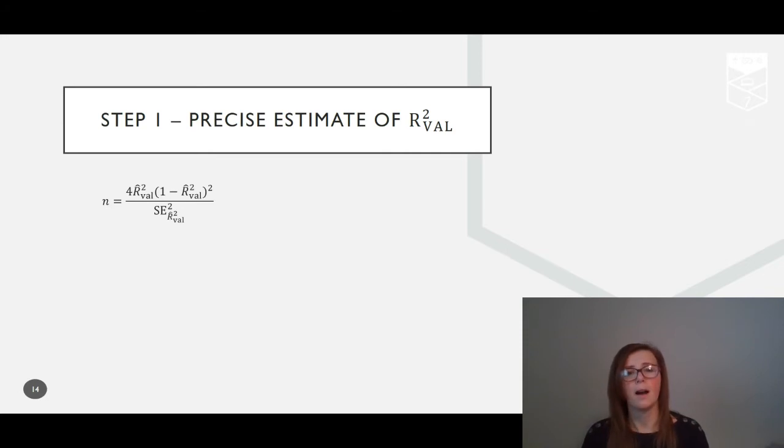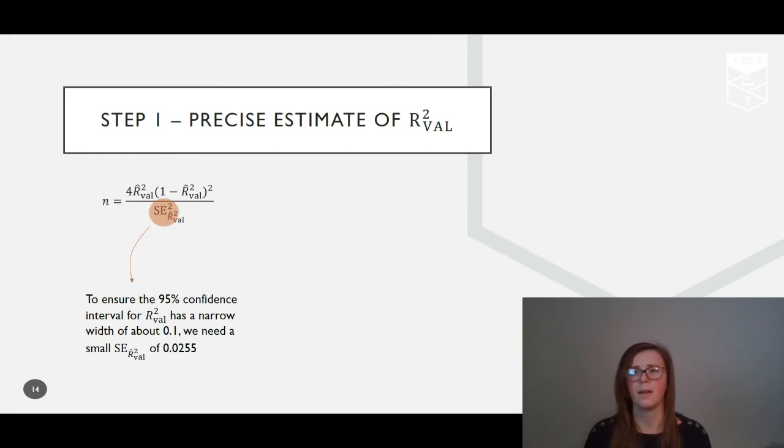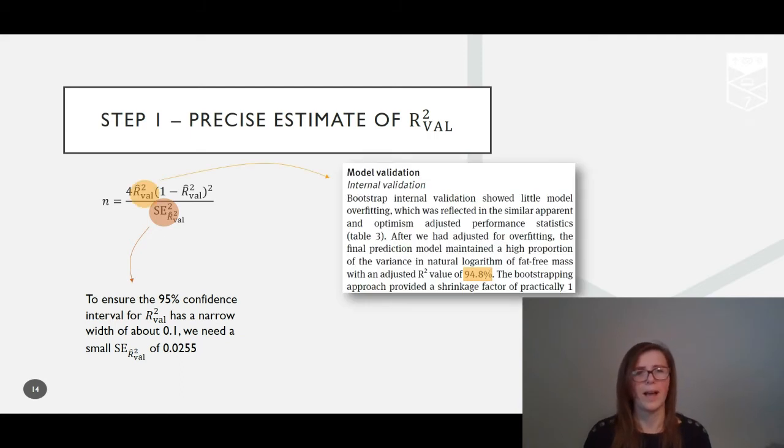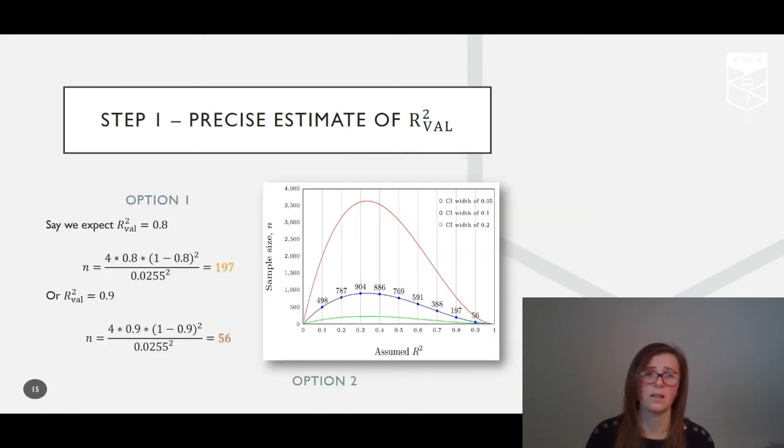For step one, we recommend targeting a confidence interval width of no more than about 10% around your estimate of R-squared, with a corresponding standard error of at most 0.0255. Huda quotes an R-squared of 94.8% after optimism adjustment. This is very impressive and unlikely to be replicated in the external data, so it's really up to you what you think a reasonable estimate of R-squared will be, as this could depend heavily on the clinical context. If we assume conservatively that the R-squared would be about 0.8 in our new data, we can either plug the numbers into the equation from the previous slide or, for round numbers or approximations, we can read off the provided graph included in the publication as Figure 1.